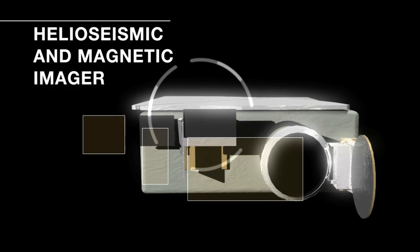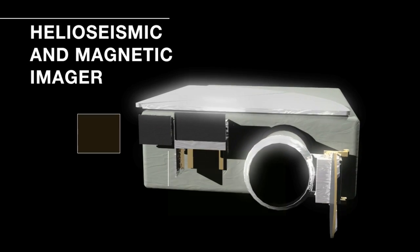HMI is the helioseismic and magnetic imagery. Very long words for something that's very useful to look at on the sun.